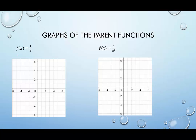Each of these two functions has a vertical asymptote at 0, because if we took the denominator and set it equal to 0 — or said x can't be 0 — that factor of x is not going to cancel, so it would be considered a vertical asymptote. Both have a vertical asymptote at x equals 0. When we draw a vertical asymptote we usually make it a dashed line to indicate it's not really part of the graph; the graph is just going to get closer and closer to it.